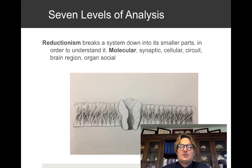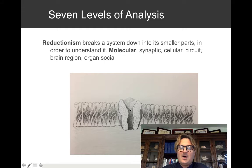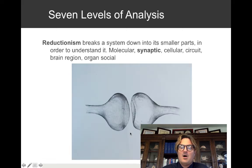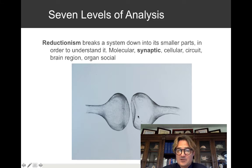Reductionism breaks a system down into its smaller parts in order to understand it. We call these the seven levels of analysis. The molecular level deals with channels and pumps in the neuronal membrane — a bilipid layer with gates that allow molecules to pass through. The synaptic level involves the synapse: neurotransmitters are released from the presynaptic neuron into the synapse, where they diffuse across and hit receptors on the postsynaptic neuron.